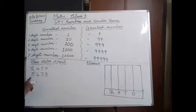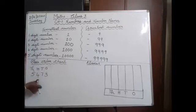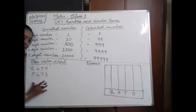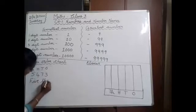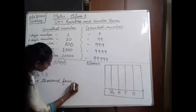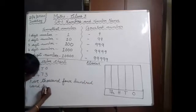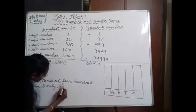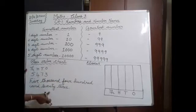I have written one number that is 5,473. How we are going to represent this? The 3 is in the 1's place, 7 is in the 10's place, 4 is in the 100's place, 5 is in the 1000's place. How we are going to write the number name of this? 5,473 — five thousand four hundred and seventy-three.